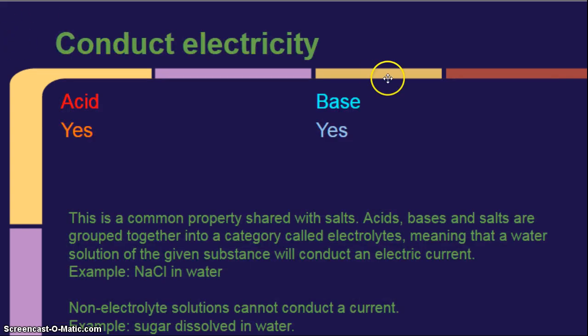Conducting electricity. So again, I'd make another line going horizontally in your notes, because now we're talking about conducting electricity. They both do. This is a common property shared with salts. Acids, bases, and salts are grouped together into a category called electrolytes. You've heard of that, especially with like Gatorade and Powerade, right? Filled with electrolytes. That means that a water solution of the given substance will conduct an electric current. For example, table salt in water would be an electrolyte. Non-electrolyte solutions cannot conduct a current, such as sugar. So, in NaCl, you have a metal and a non-metal in an ionic compound. Sugar, you have only non-metals in covalent bonds. So, that's why the difference.